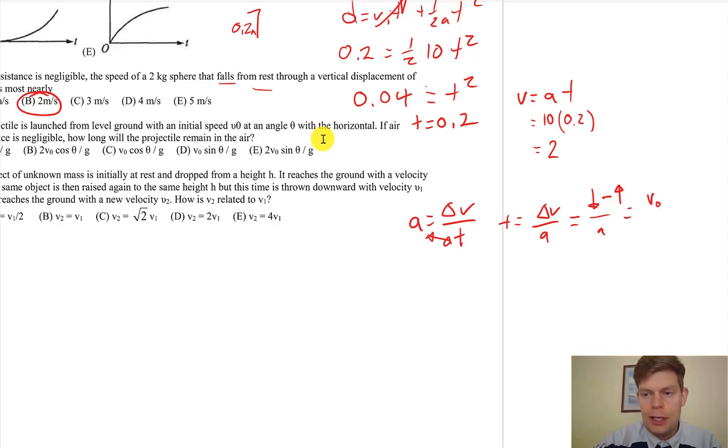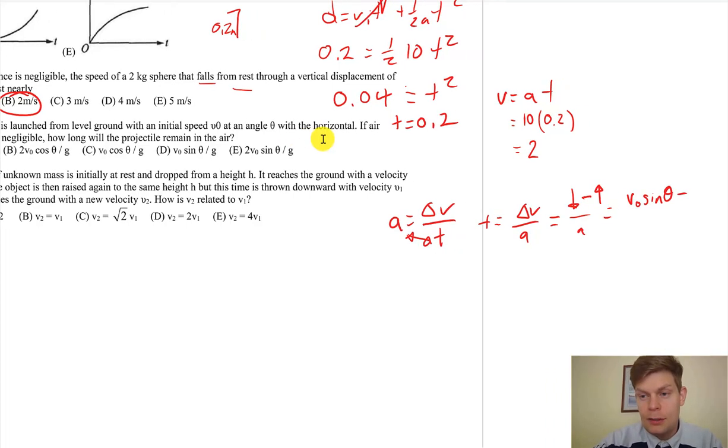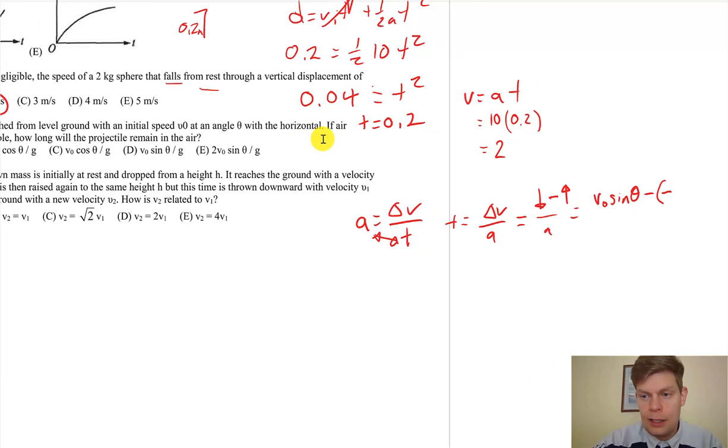So it ends up we're at v_0 sin θ at the end of it all, and then we're going to subtract—it was going up initially, so we'll make that negative. I've decided up is negative and down is positive because for this question it'll work out nicely. It works either way; it's just for this question it'll work out nicely.